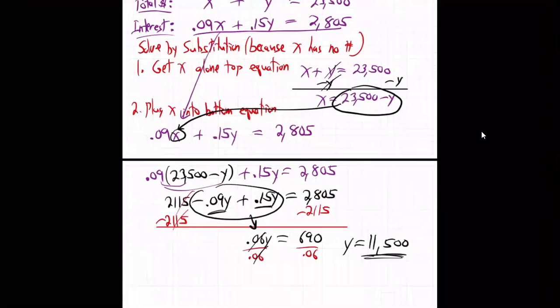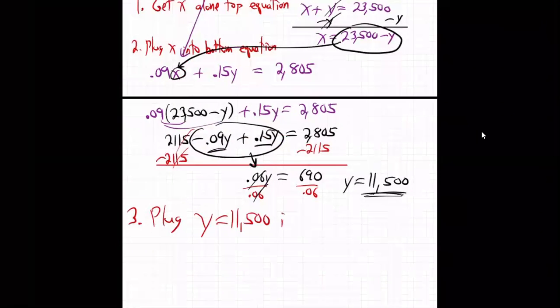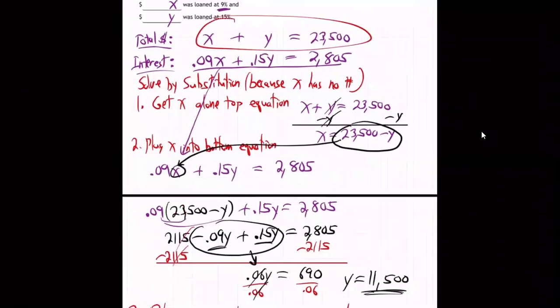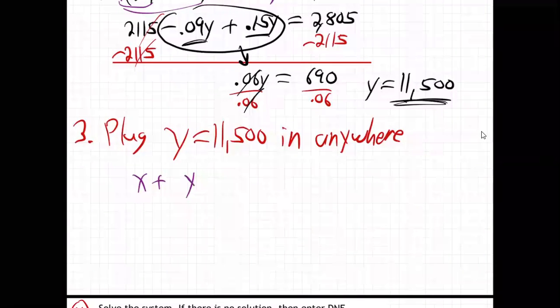So step one, solve by substitution, get X alone, plug X in the bottom, and then step three, plug Y equals 11,500 in anywhere. So the easiest place would be that top equation for sure. X plus Y is 23,500. That's for sure the place.